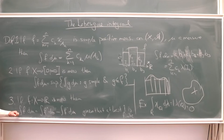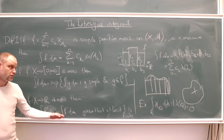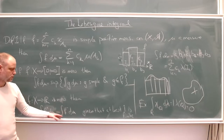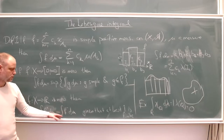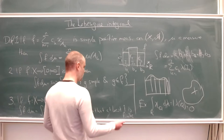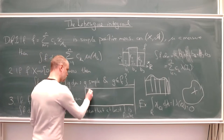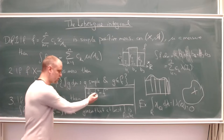To integrate a general real-valued measurable function f, we take the non-negative part, integrate that — giving a positive number — then take the negative part and integrate that, also giving a positive number, and subtract. So we decompose f into its positive part and its negative part.